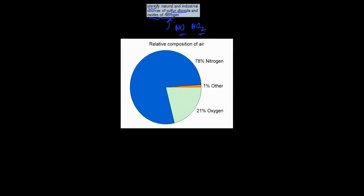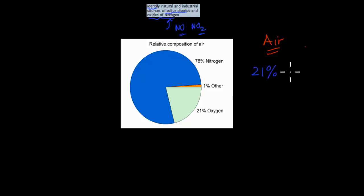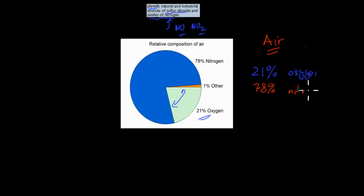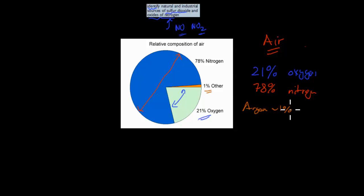First I'll quickly talk about the air itself and what it's actually made up of. The air we breathe in — we know quite a bit of it must be oxygen because we need oxygen to survive. So 21% of that air is actually oxygen. Now 78% of it is nitrogen. We don't often hear about nitrogen, but the vast majority of the air we breathe is actually nitrogen. The remaining 1% is a combination including argon, about 1%, and carbon dioxide, CO2, makes up around 0.01%.